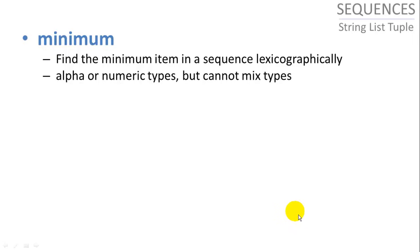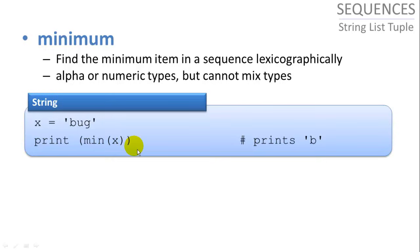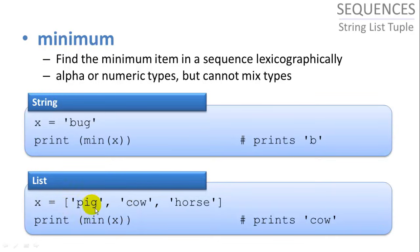Minimum finds the minimum number lexicographically, which means alpha numerically. But this only works when all of the items in the list are either alpha or numeric. You can mix and match integers and floating point values, but you cannot have both strings and integers. So if x equals bug, we want to find the minimum. The minimum is b. We have a list of three strings. We're going to find the lowest one, which is c, cow. So it prints cow.